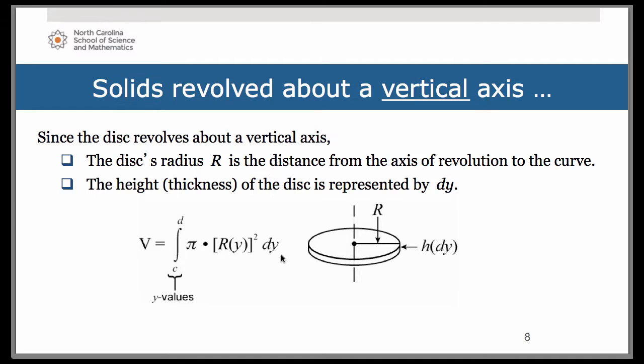The R value is going to still be the length of your representative rectangle from the axis of revolution to the curve. Now this time you're going to think right minus left. So the R value, and again it's going to be an expression that you'll compose by taking what the representative rectangle is hitting on the right side minus what it's hitting on the left side.